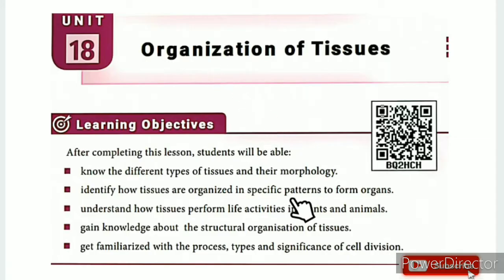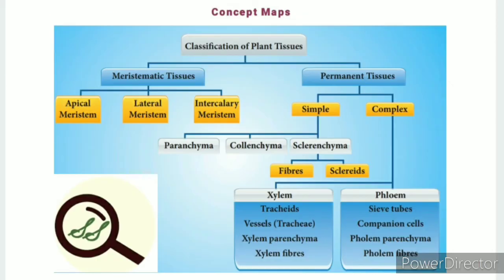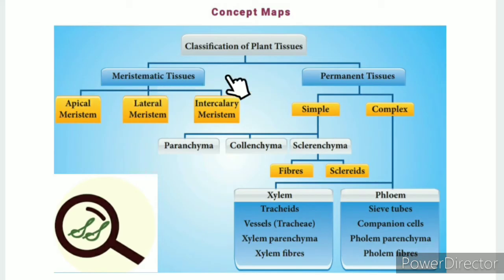The concept map for classification of plant tissues shows that plant tissues are divided into two types: meristematic tissues and permanent tissues.